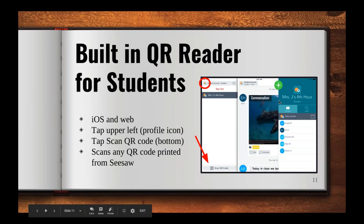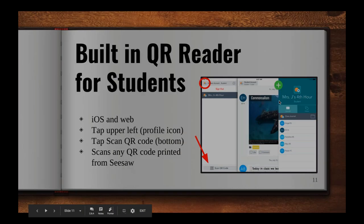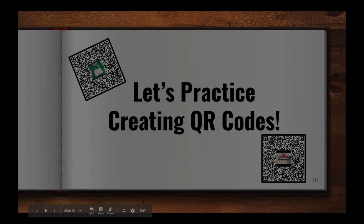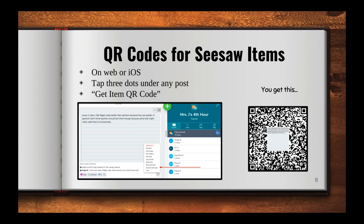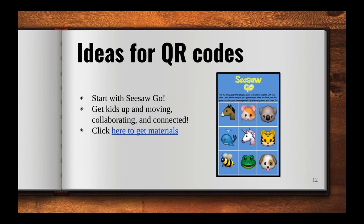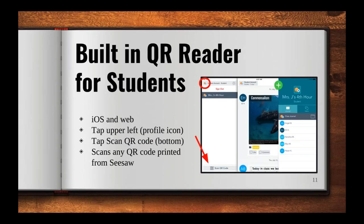I should also point out that these QR codes can be scanned with another app — it doesn't have to be Seesaw. If you sent a code home and a family member doesn't have the Seesaw app, it would still work with another QR reader. Now I'm going to go through some ideas for QR codes. Now that you know how to generate and print them, I'm going to share some creative ways teachers have used the Seesaw QR code.